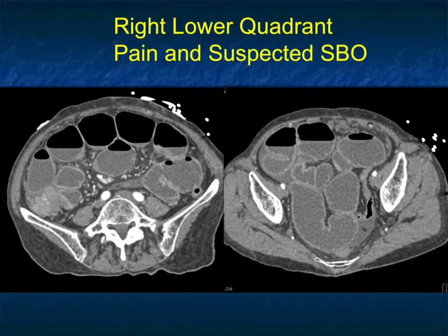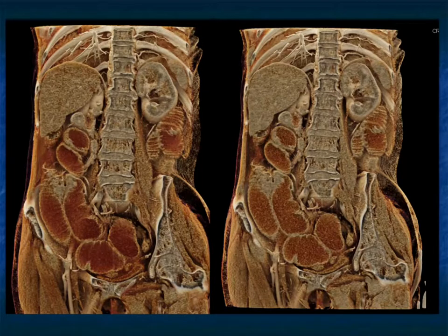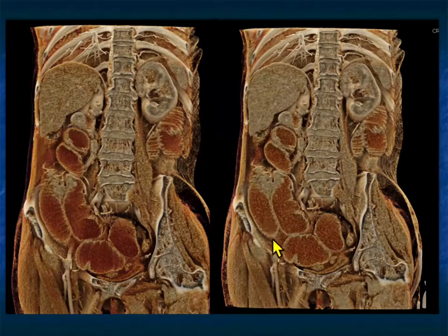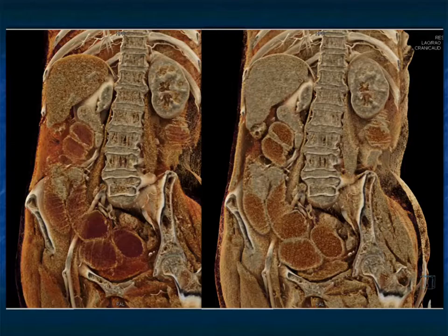Another patient — with right lower quadrant pain and suspected bowel obstruction. You can see the patient's small bowel is dilated and there's some soft tissue in the right lower quadrant. Is that in the terminal ileum, ileocecal valve, or cecal level? There it is very nicely on the cinematic rendered views, showing the dilated fluid-filled loops of bowel and the mass — possibly a tumor at the very distal ileum or ileocecal valve level. The surgeon knows precisely what needs to be done. Transition points for small bowel obstruction are often hard to determine, but looking at things in a volume makes it easier, and cinematic rendering makes it better.